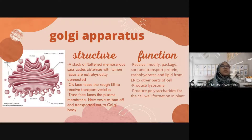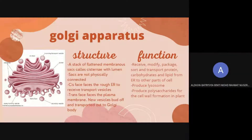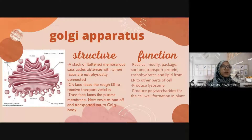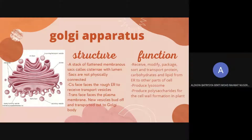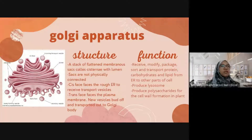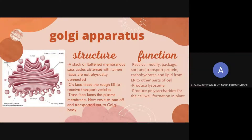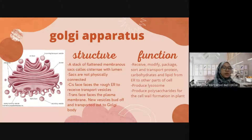That is the first difference. Then, which direction does the cis space face? The cis space faces the rough endoplasmic reticulum, and the trans face faces the plasma membrane. If you were to draw an arrow, it would go from cis space to trans space — so the movement of substances goes from the cis space to the trans space.